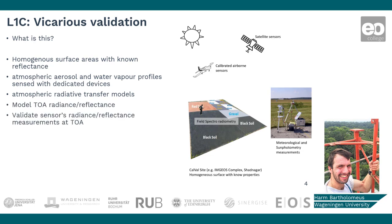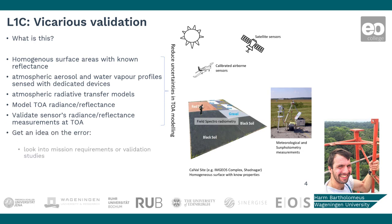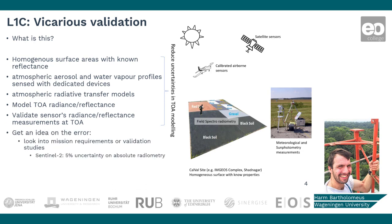To get an idea of the absolute accuracy, you can look in the mission requirement documents. For Sentinel-2, the European Space Agency aims for a maximum 5% uncertainty.